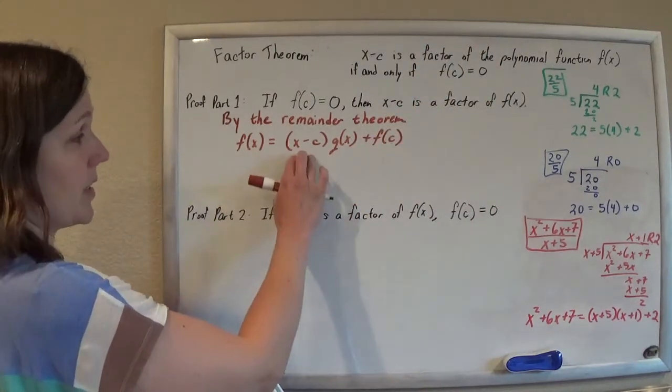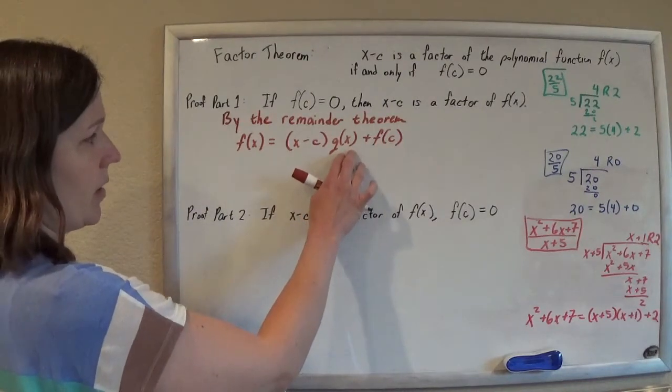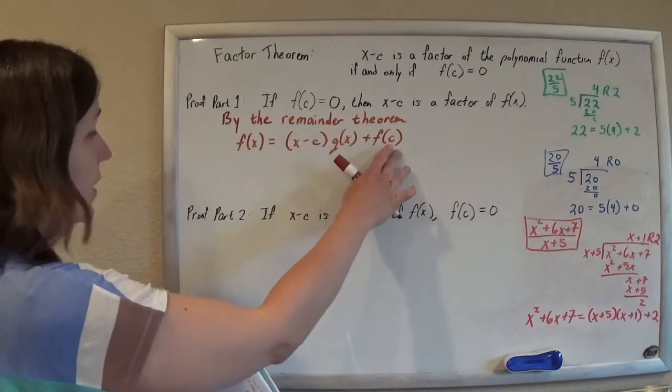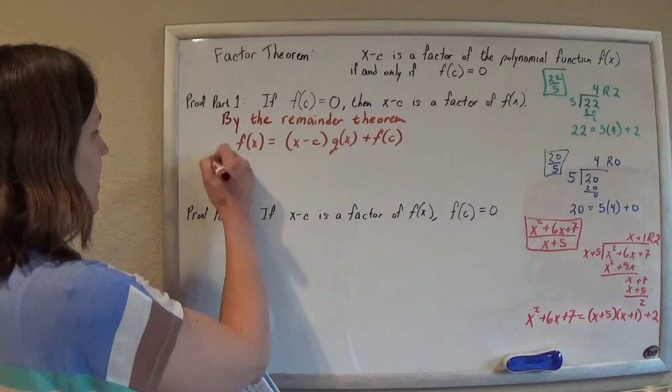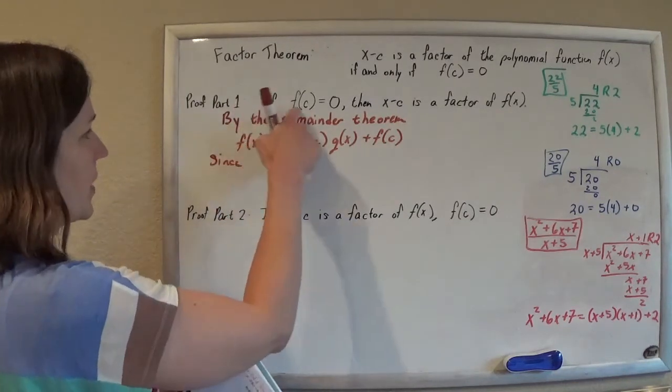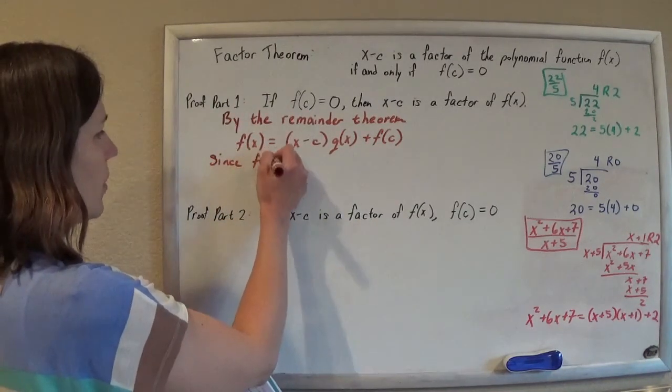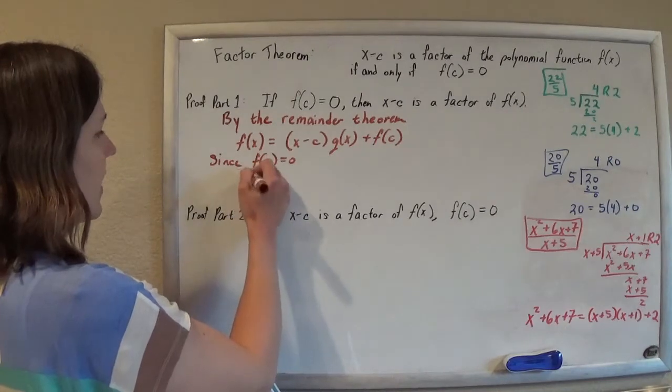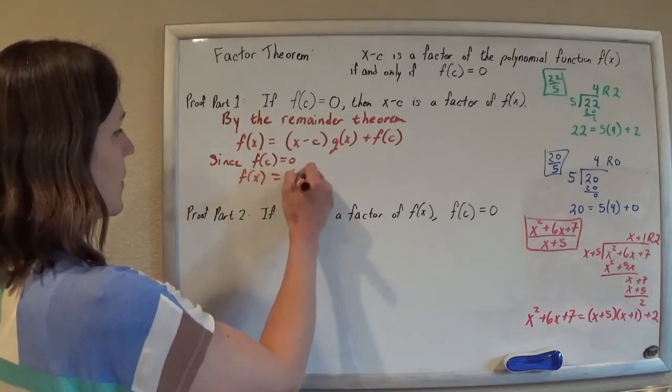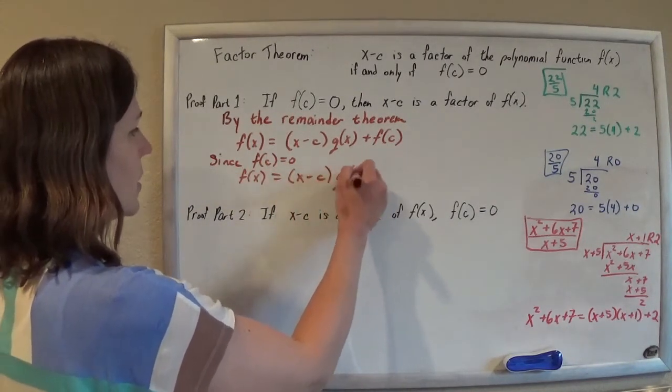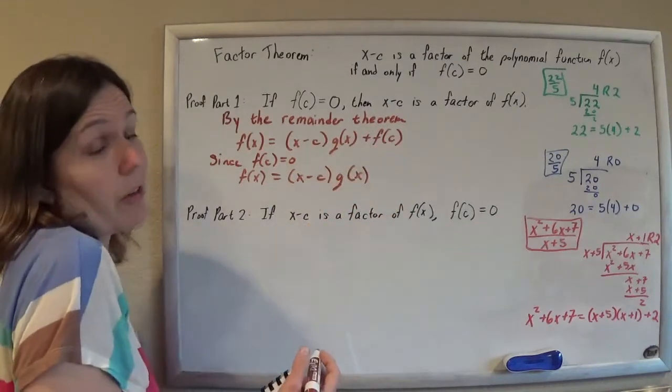We can write any polynomial as x minus c times the quotient basically plus the remainder. And since we know, since we're given f of c equals zero, then we can say that f of x equals x minus c times q of x, and then that's just plus zero, right?